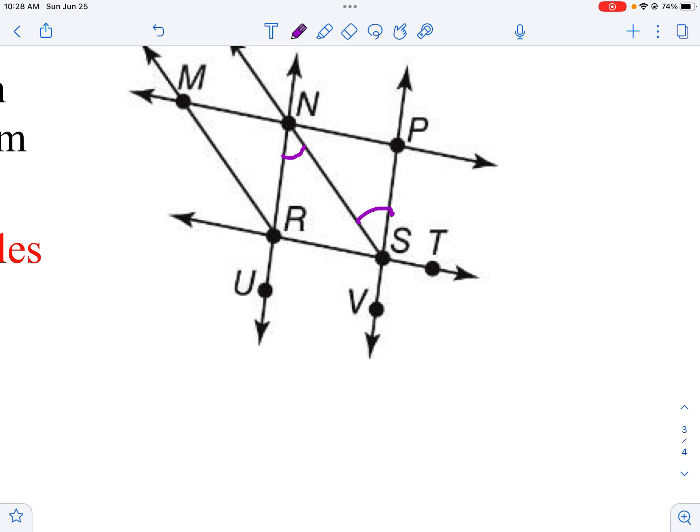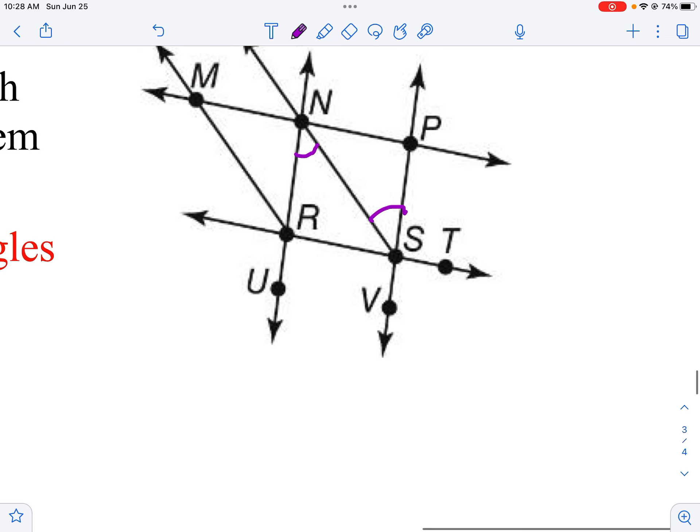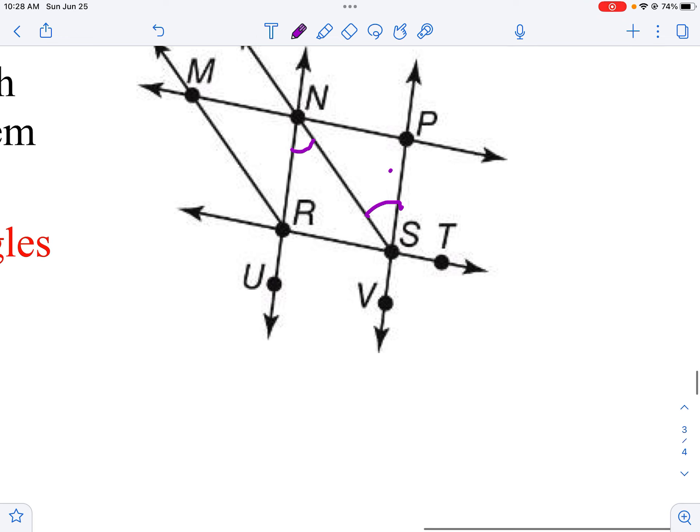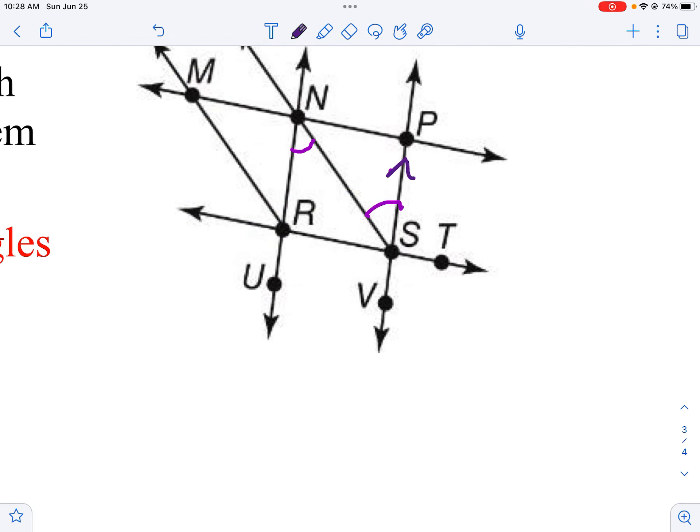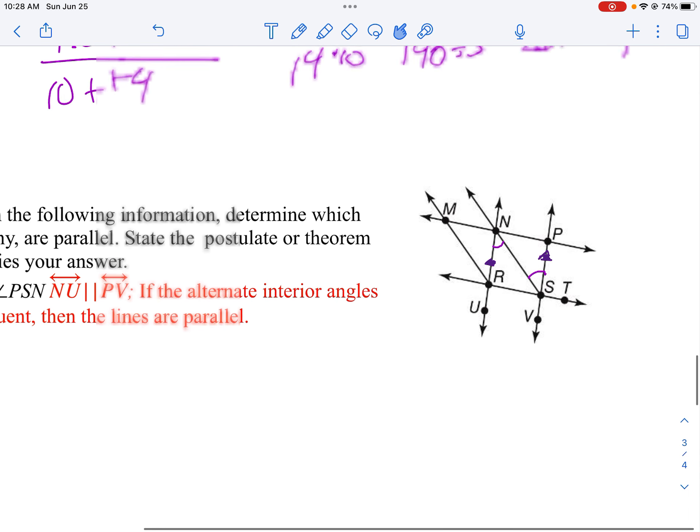Well, what lines, if any, are parallel because of these two angles? So that would make this line parallel to this line. Now, I wrote NU, but you could have just as well wrote NR or RU.